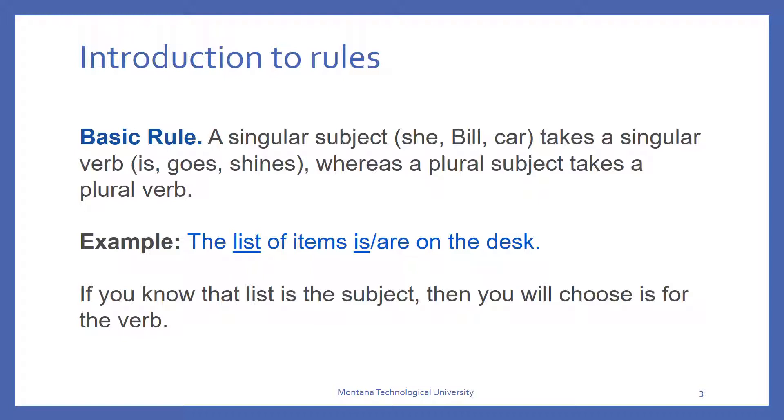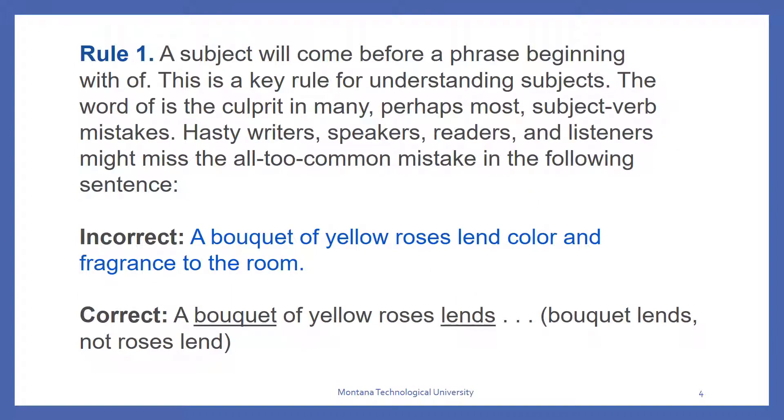We start off simple. A simple singular subject, example here, she, bill, or car, takes a singular verb: is, goes, or shines. Whereas a plural subject takes a plural verb. Here's some examples. The list of items is on the desk. List is singular, so is is a singular verb. If you know that list is the subject, you have to choose is.